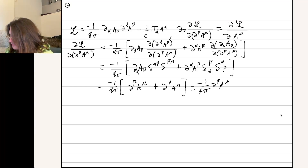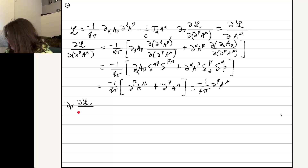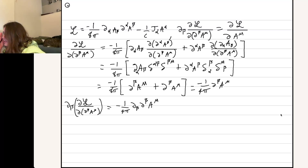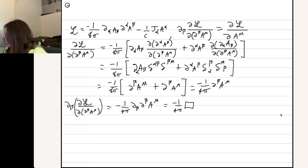Then we need to take the four-divergence of that now. So the four-divergence of the thing we just calculated is going to be minus 1 over 4 pi, del^beta del_beta A_mu. That is actually just the box operator on A_mu — so we have the d'Alembertian box A_mu.